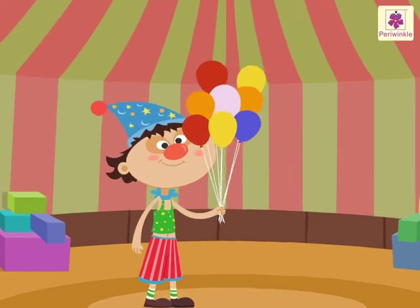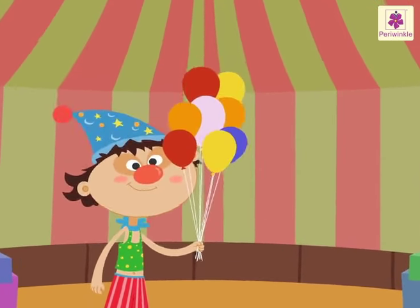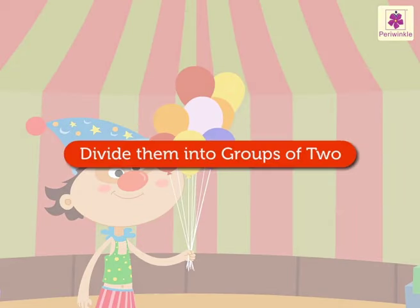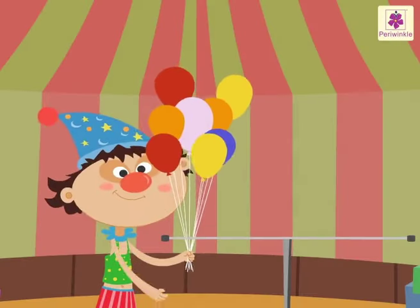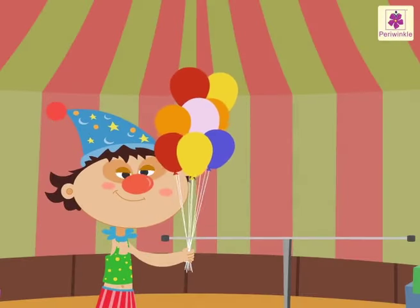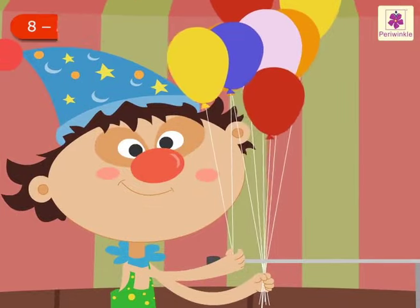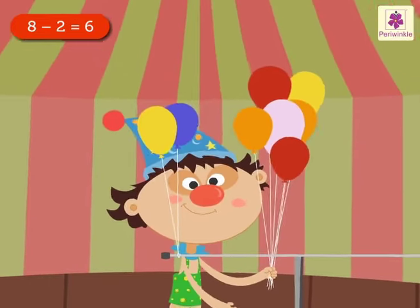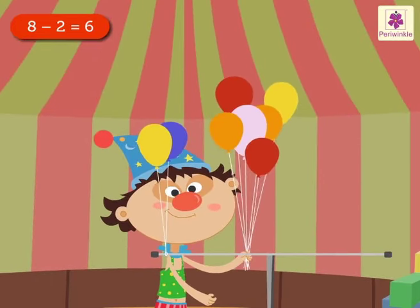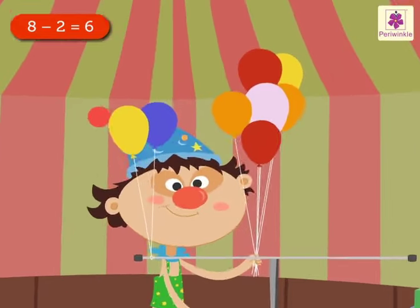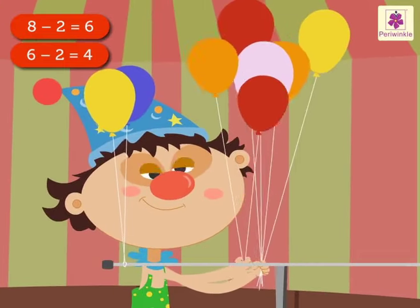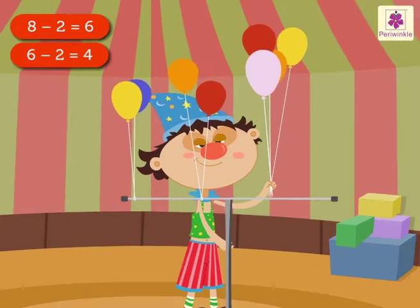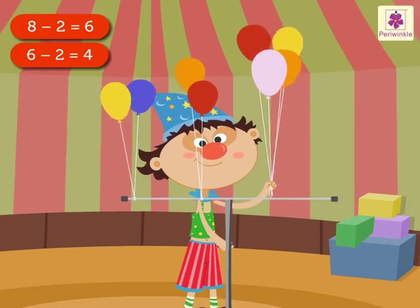Look, Jojo has eight colorful balloons in his hand. Since Jojo has to divide in groups of two, he ties two balloons from eight. Now he is left with six balloons in his hand. Again, he ties two more balloons from six. Now he is left with four balloons in his hand.